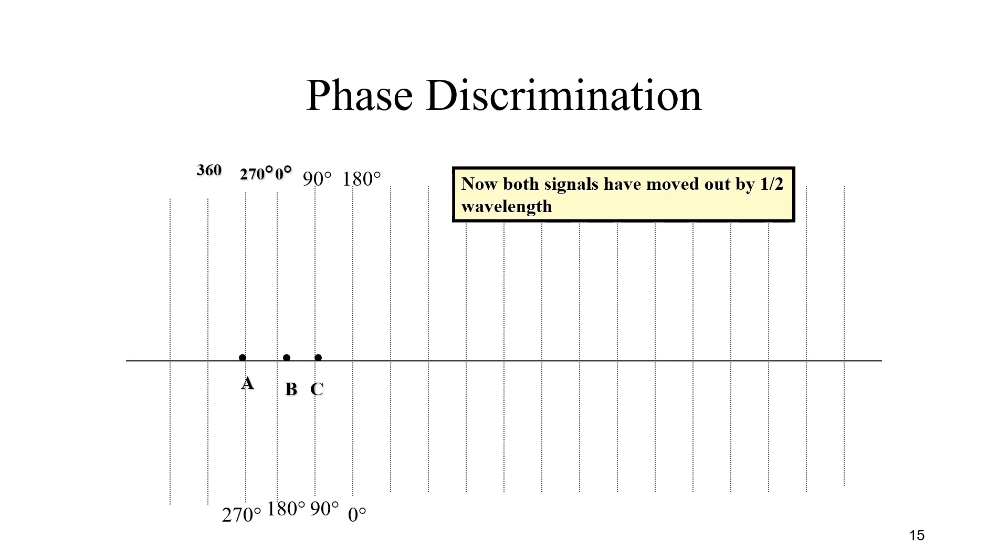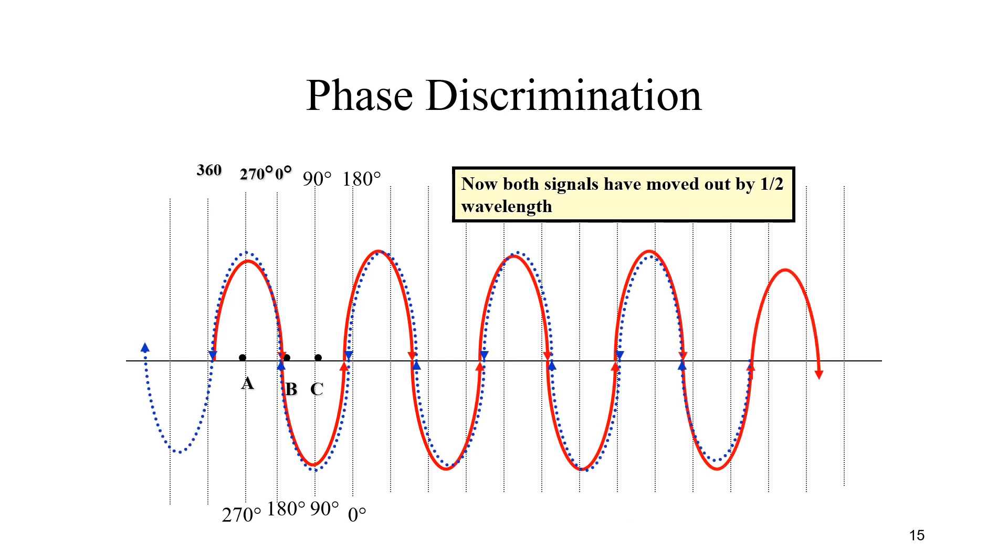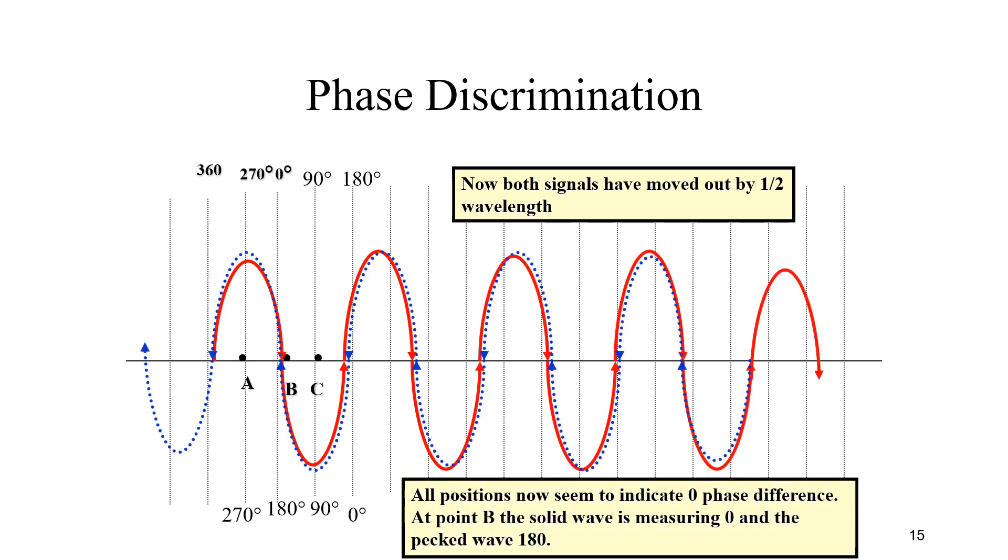To maintain phase synchronization for the transmitted signals of the master and slave, the master may trigger the slave to transmit, or the atomic oscillators may be used to transmit at exactly the required instant. This is controlled by the master.